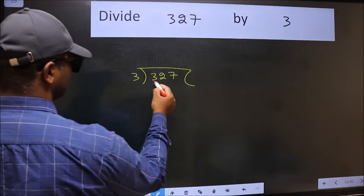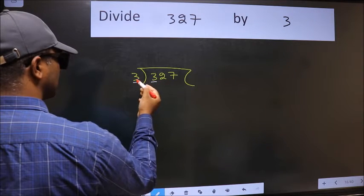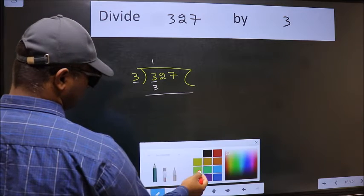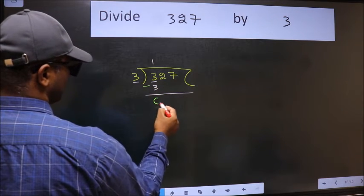Here we have 3, here also 3. When do we get 3 in the 3 table? 3 once is 3. Now we should subtract. We get 0.